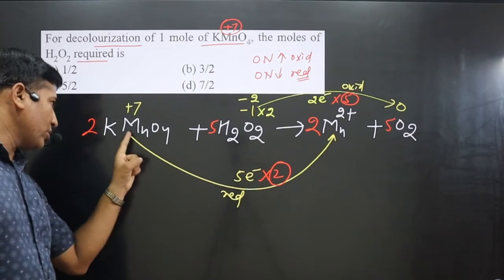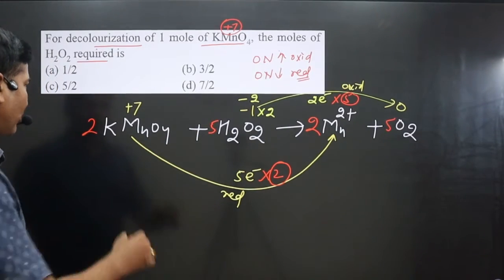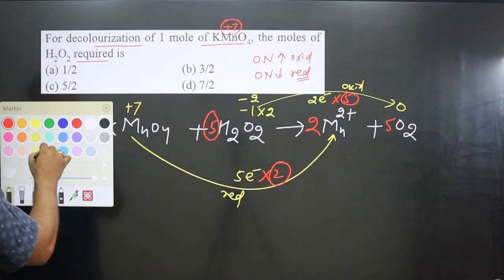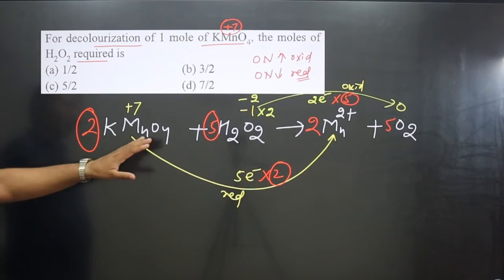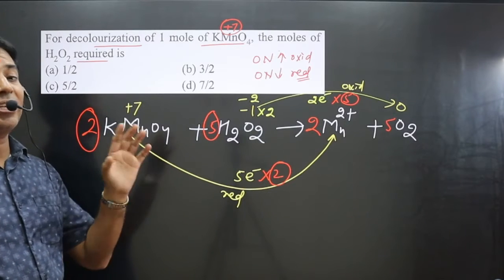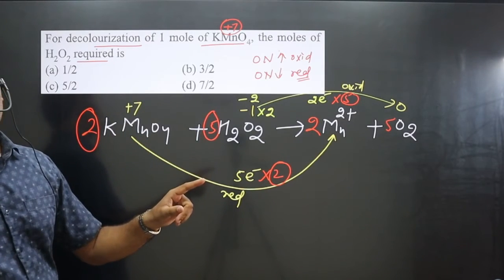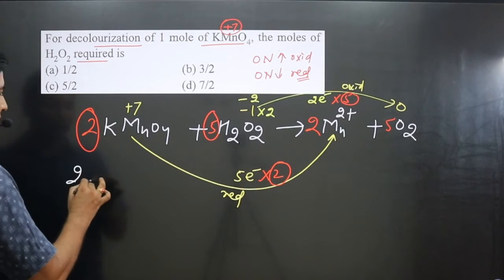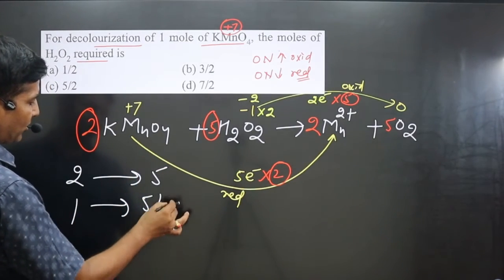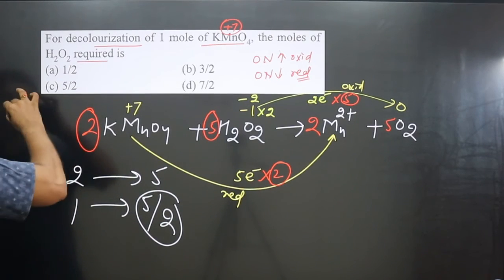From the balanced equation, 2 moles of KMnO₄ react with 5 moles of H₂O₂. Therefore, 1 mole of KMnO₄ will react with 5/2 moles of H₂O₂. The answer is 5/2, which corresponds to option C.